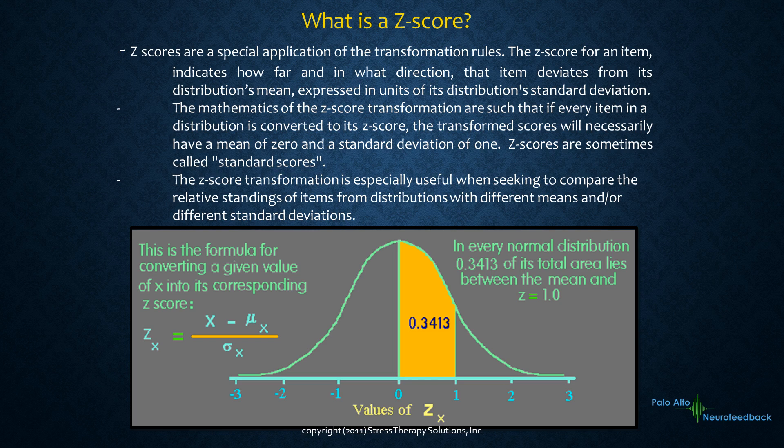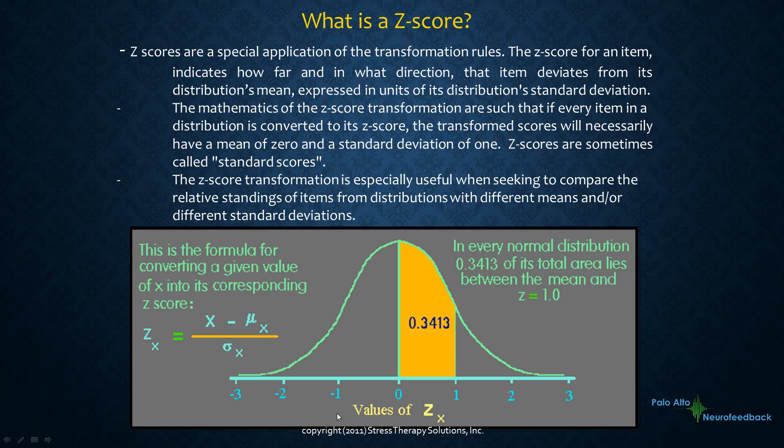Z-scores are a special application of the transformation rules. The z-score for an item tells you how far and in what direction that item deviates from its distribution's mean, expressed in units of its distribution standard deviation. So if you remember back to statistics, if you have a population and you use this formula, you can transform it into a bell curve.